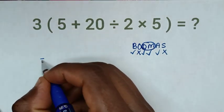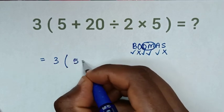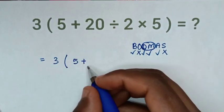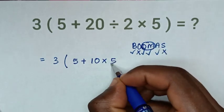So it will be equal to 3 bracket 5 plus 20 divided by 2 is 10 then times 5 bracket.